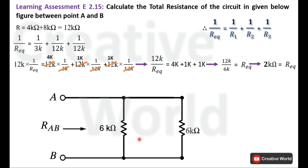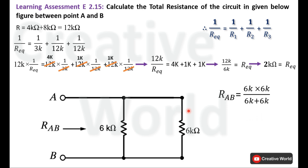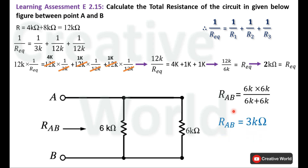Now only two resistances are left, both connected in parallel and both having the same value of 6k ohm. To calculate the resistance between points A and B, we use the product-over-sum formula: RAB equals the product of the two resistances divided by their sum. Solving this equation gives RAB equal to 3k ohm.